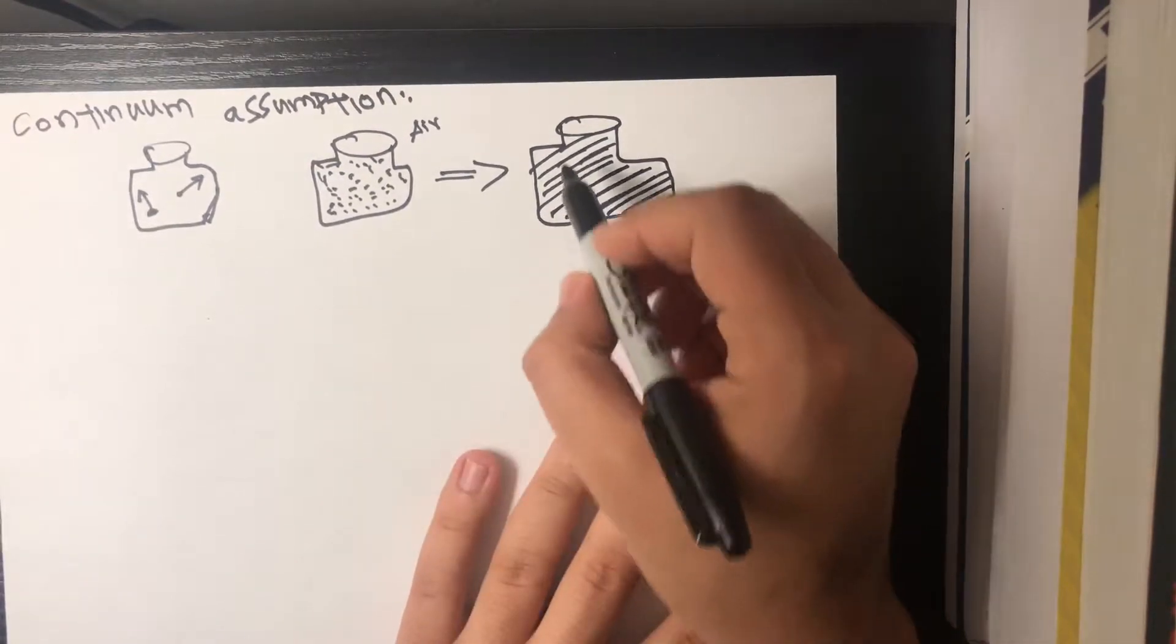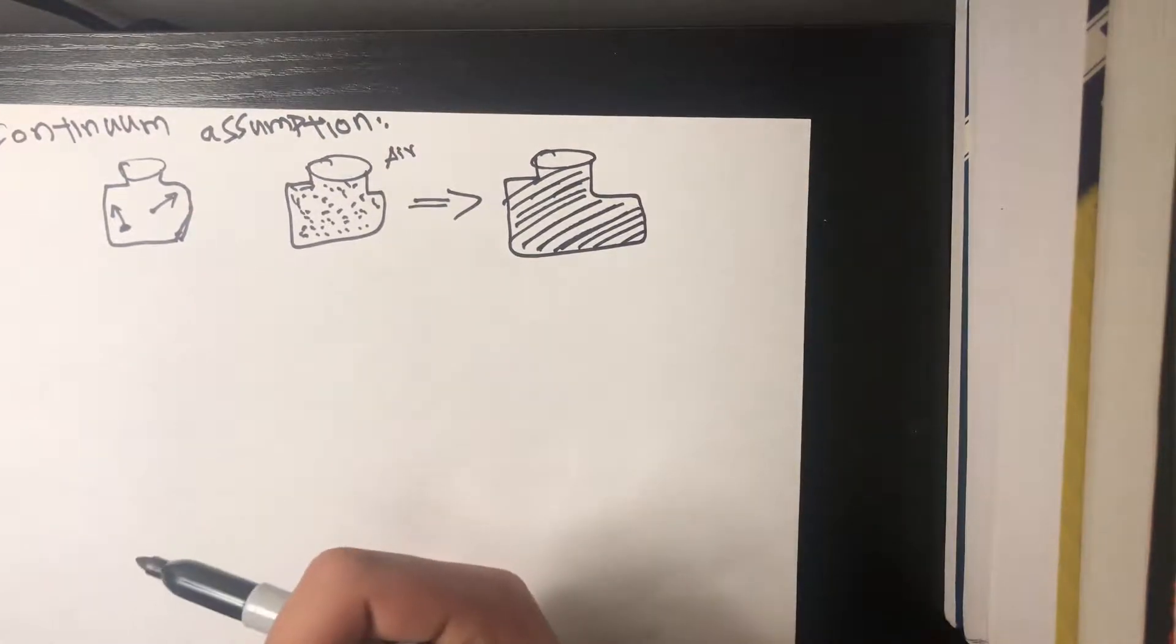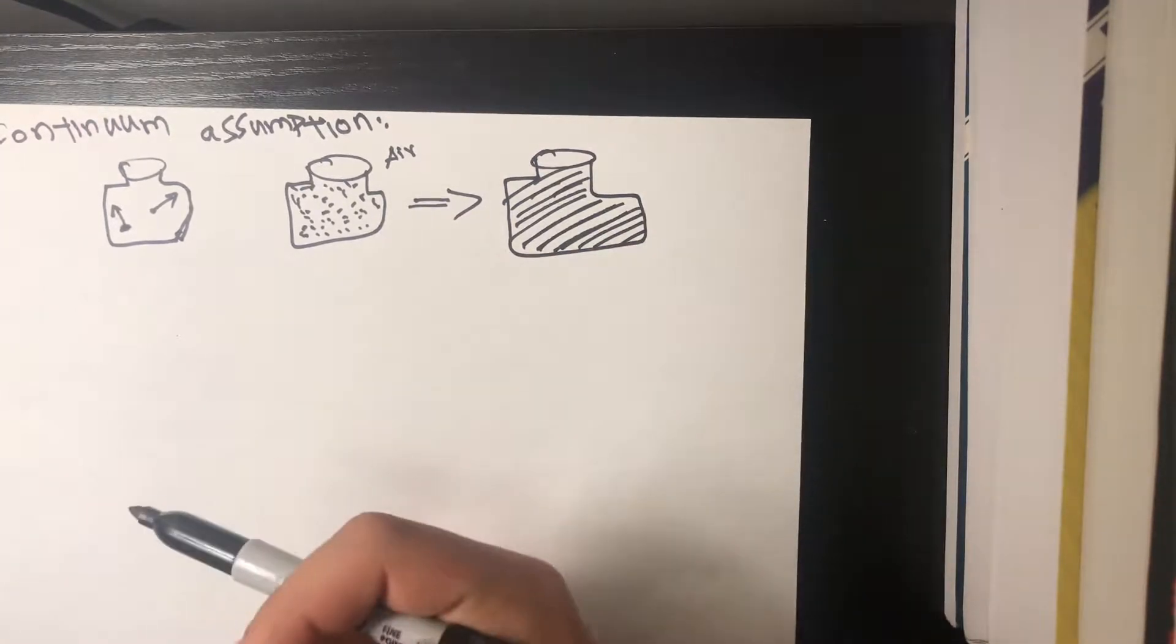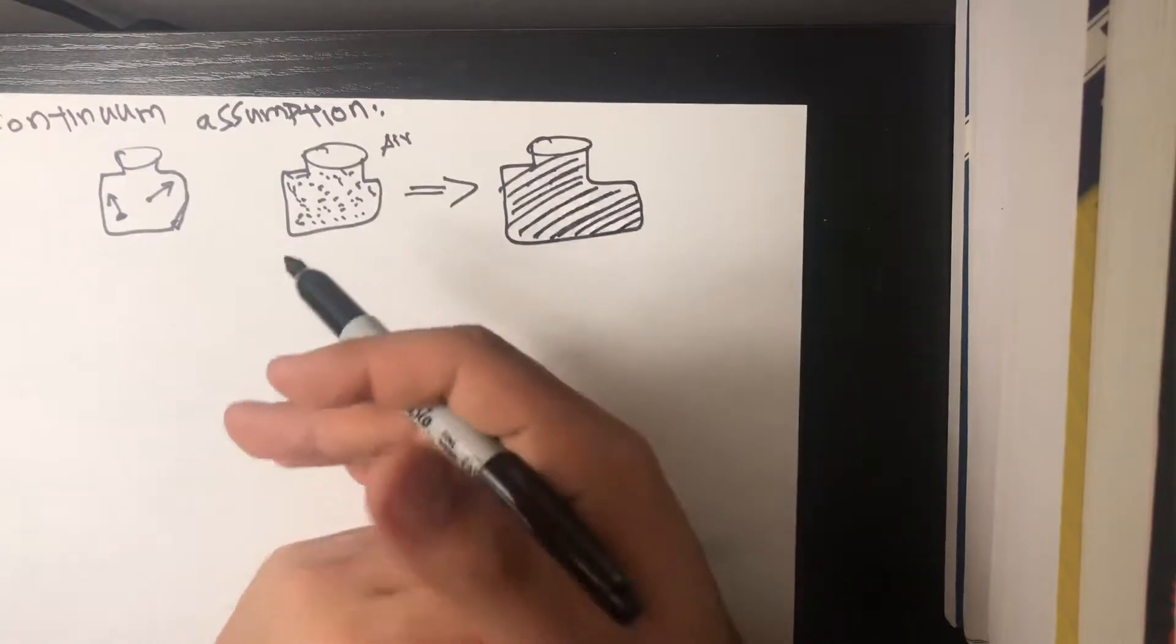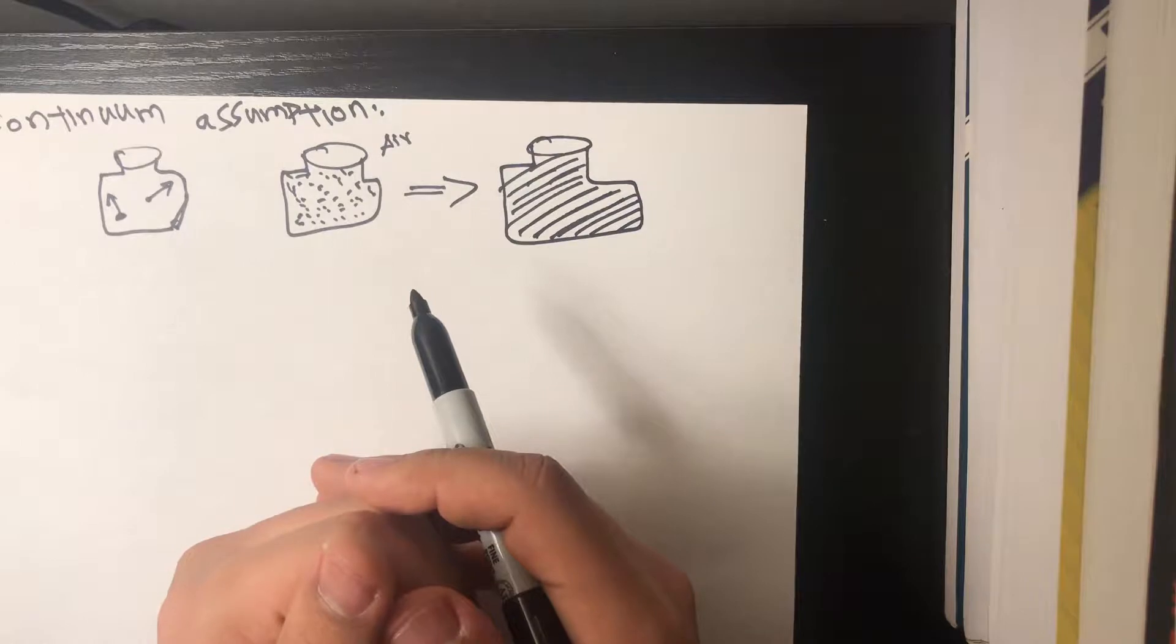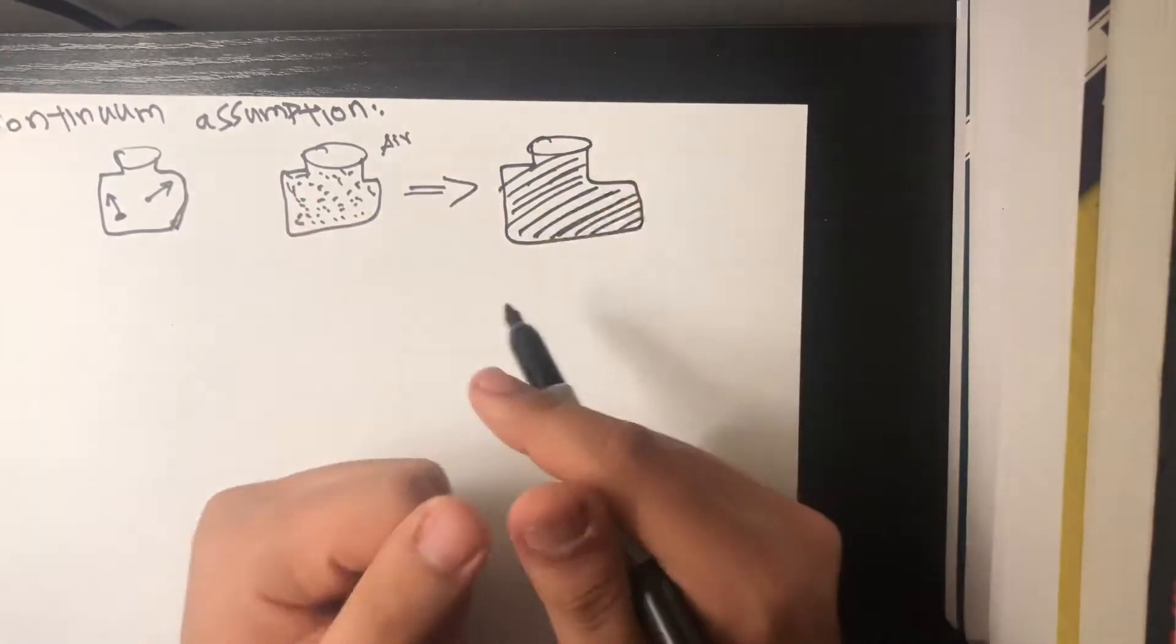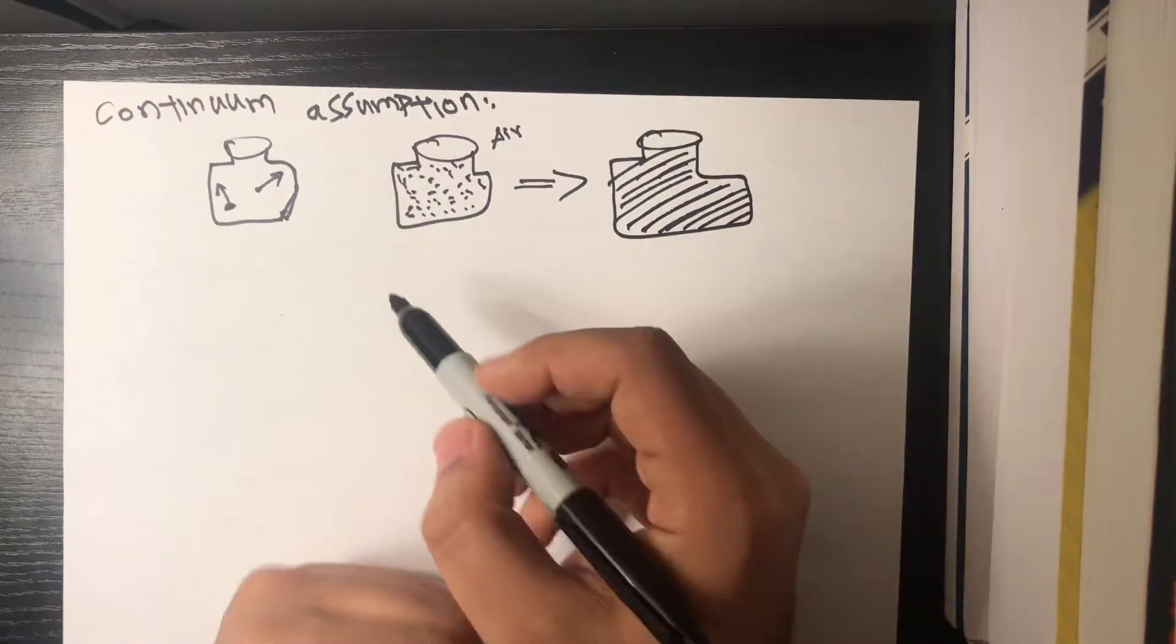This is really useful for approximating or averaging out your real situation and you would end up with an identical situation to real life because of the amount of molecules inside the jar. So the continuum assumption in short allows us to consider the situation as a smoothed out situation and we neglect all effects of molecules of air because there's so many of them.